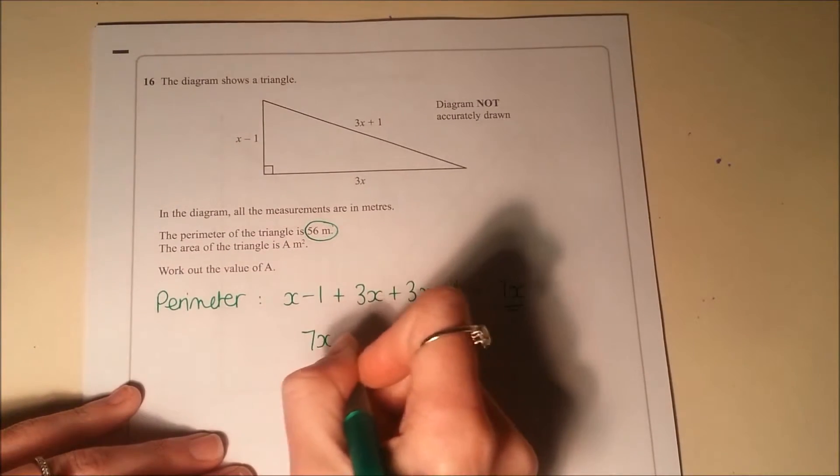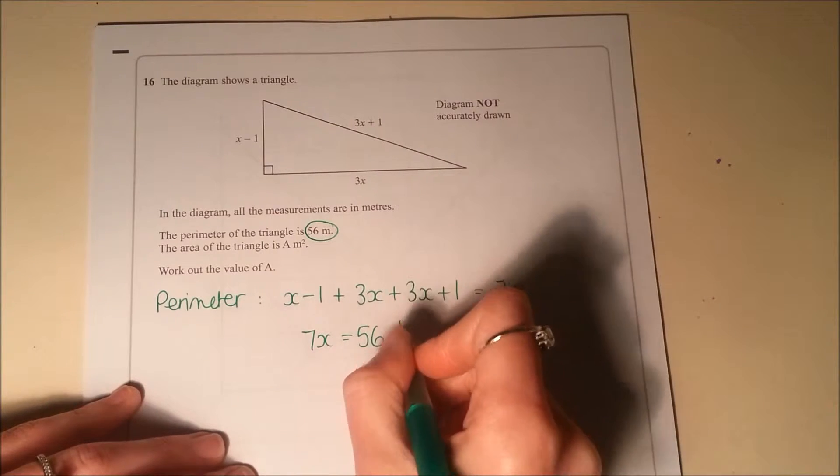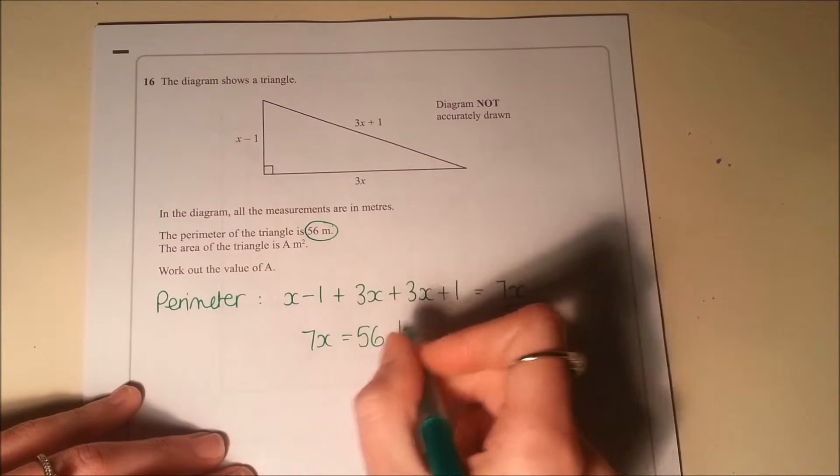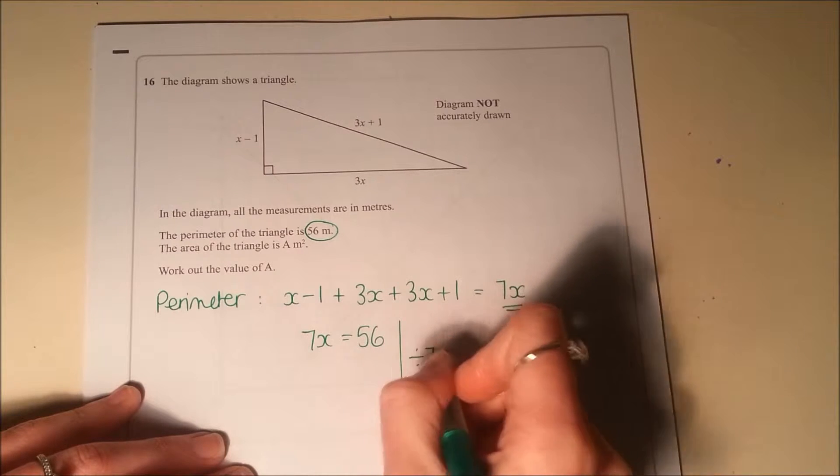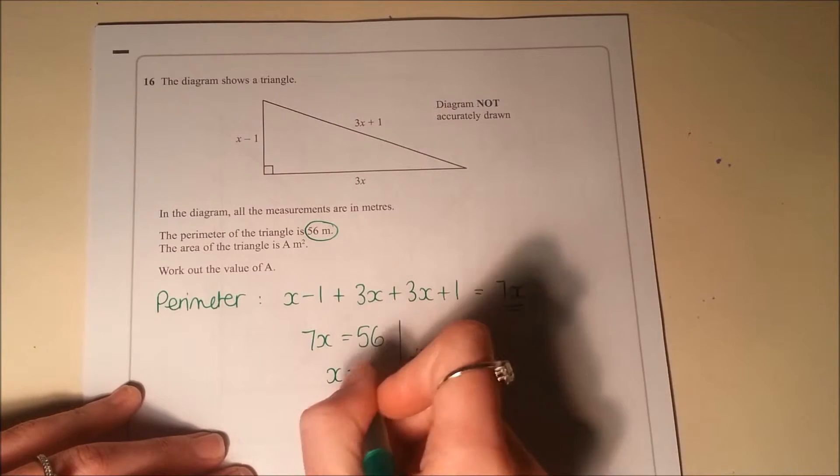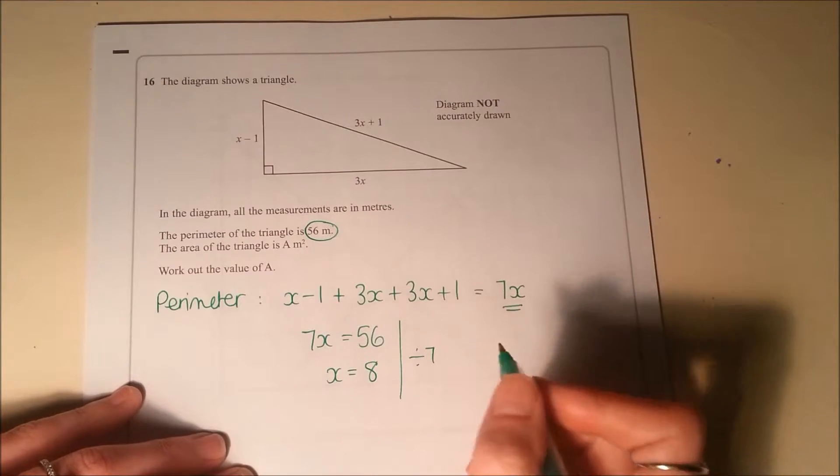So I know that 7x equals 56, so a very simple equation to solve there. 7 times something is 56. So if I divide by 7, x is going to be how many 7s in 56? 8.